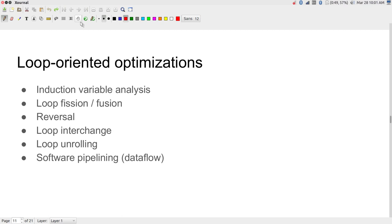Most of the time, the highly compute-intensive parts of signal processing as well as high performance computing algorithms end up being some kind of loops — for loops being the most common. So it is worth spending some time trying to understand the kind of optimizations that can be done on those kinds of loops.